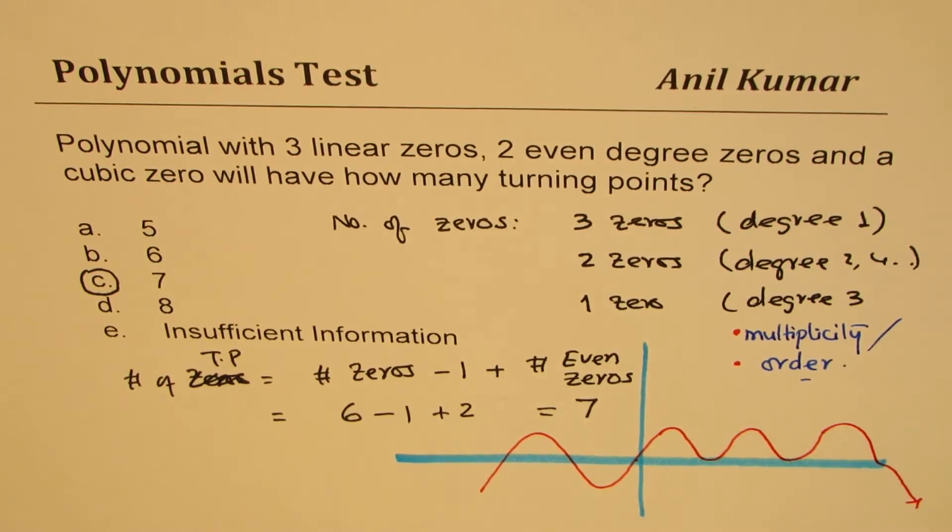So what do you get? You can now count the turning points - one, two, three, four, five, six and one, seven. So that is simpler case.